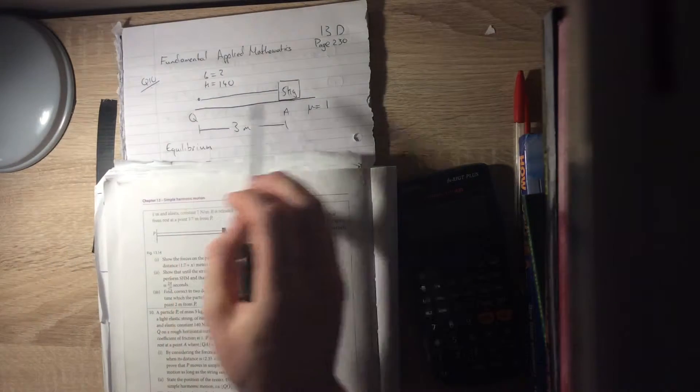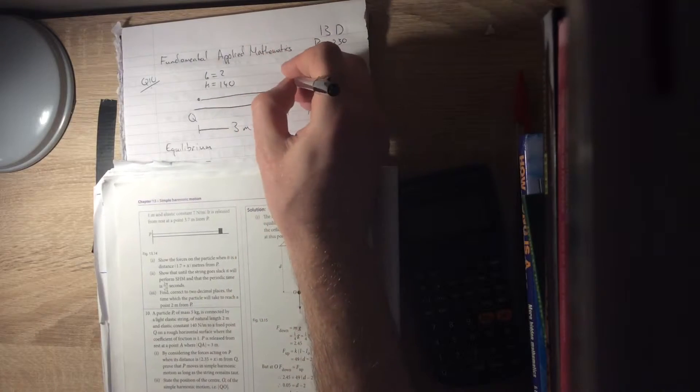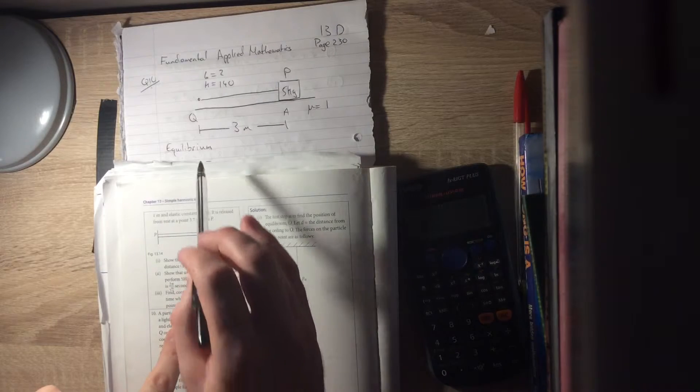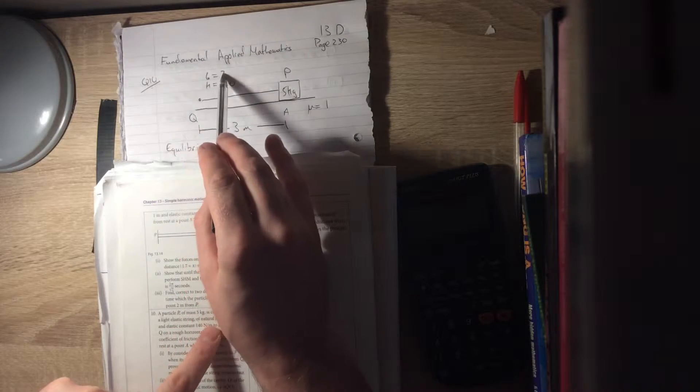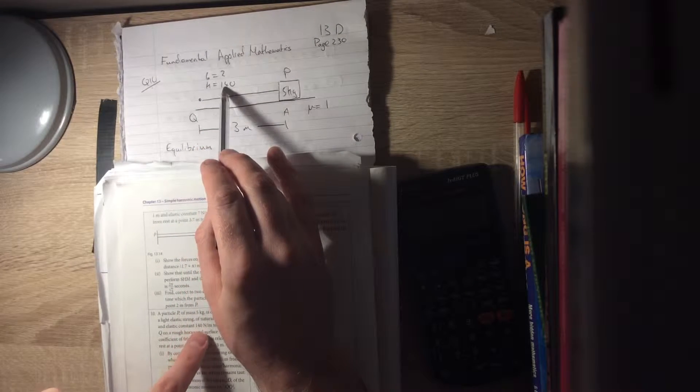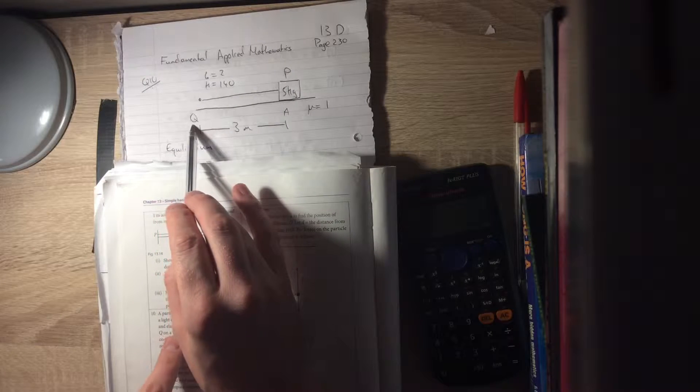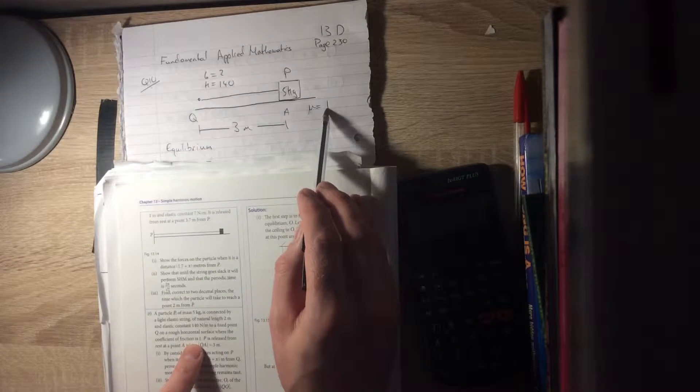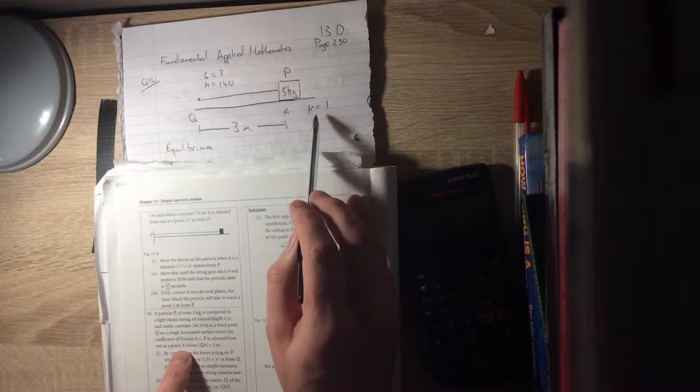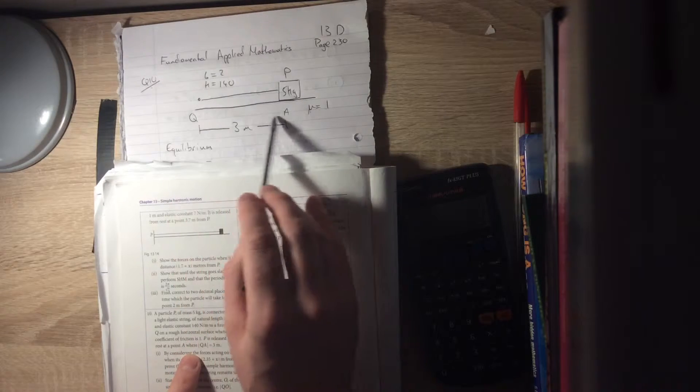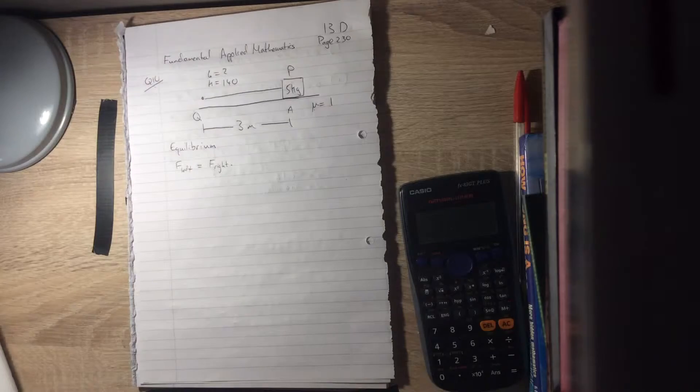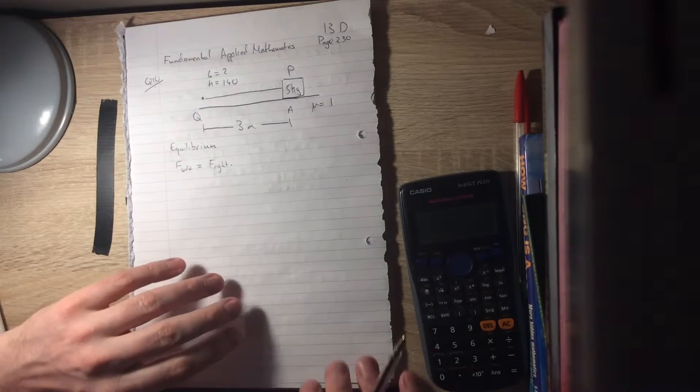A particle P of mass 5 kg is connected by a light elastic string of natural length 2 and elastic constant 140 to a fixed point Q on a rough horizontal surface with coefficient of friction 1. P is released from rest at a point A, where the distance between Q and A is 3 metres. Now the first thing they ask is show that it has simple harmonic motion, but I'm actually going to start off by showing where the equilibrium point is.